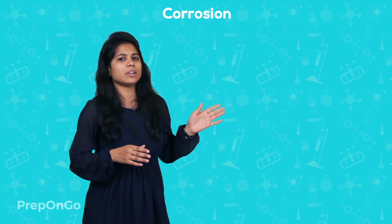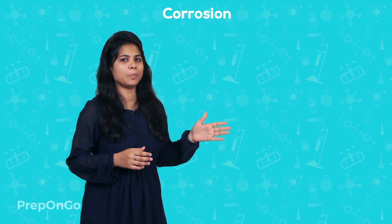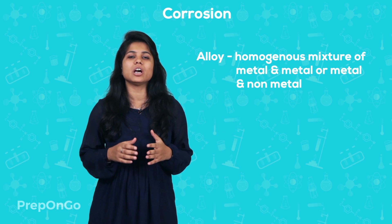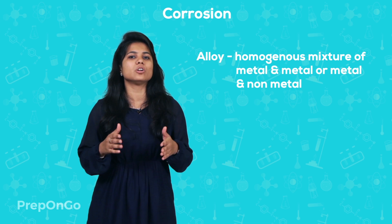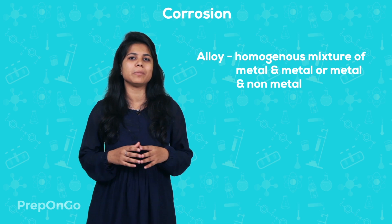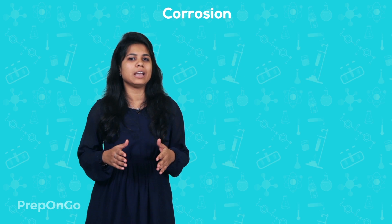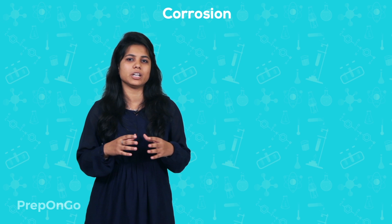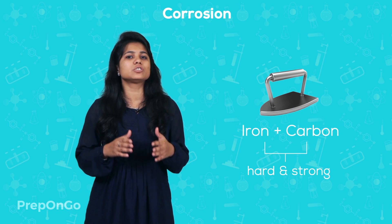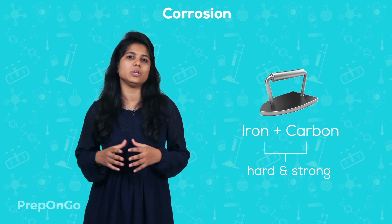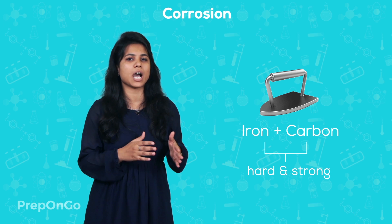The three techniques we have studied are practiced in our day-to-day life. The fourth technique is alloying, which is an important method for improving the properties of metals. An alloy is a homogeneous mixture of metal and metal, or a metal and a non-metal. It is prepared by melting a primary metal and then dissolving other elements in definite proportions. For example, iron in its pure state is soft and stretches easily when hot, but if we mix carbon in a small amount, it becomes harder and stronger.